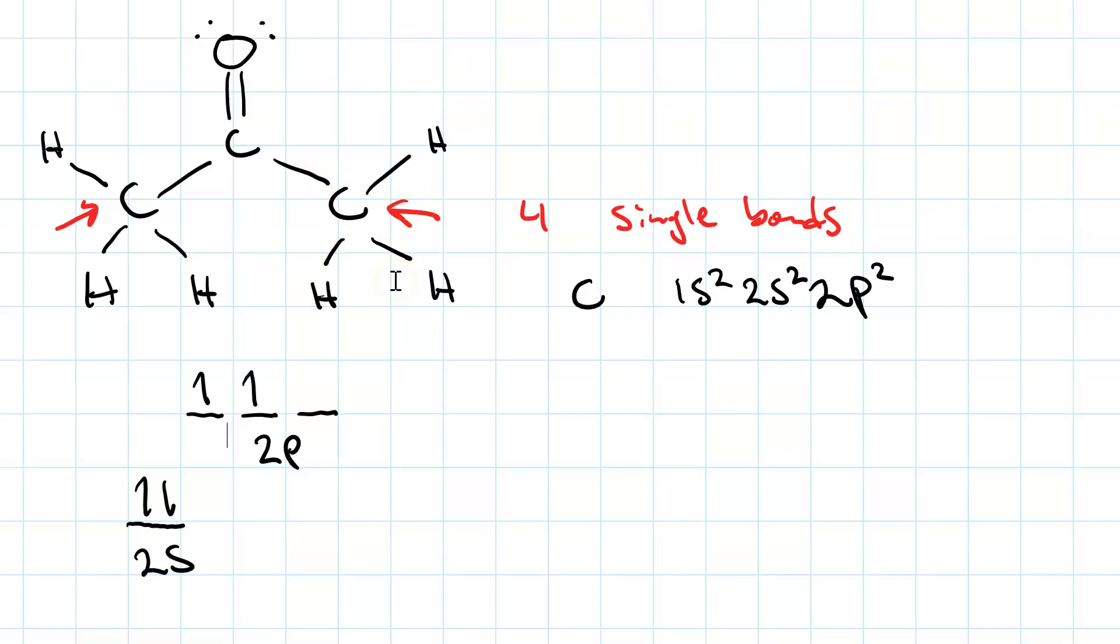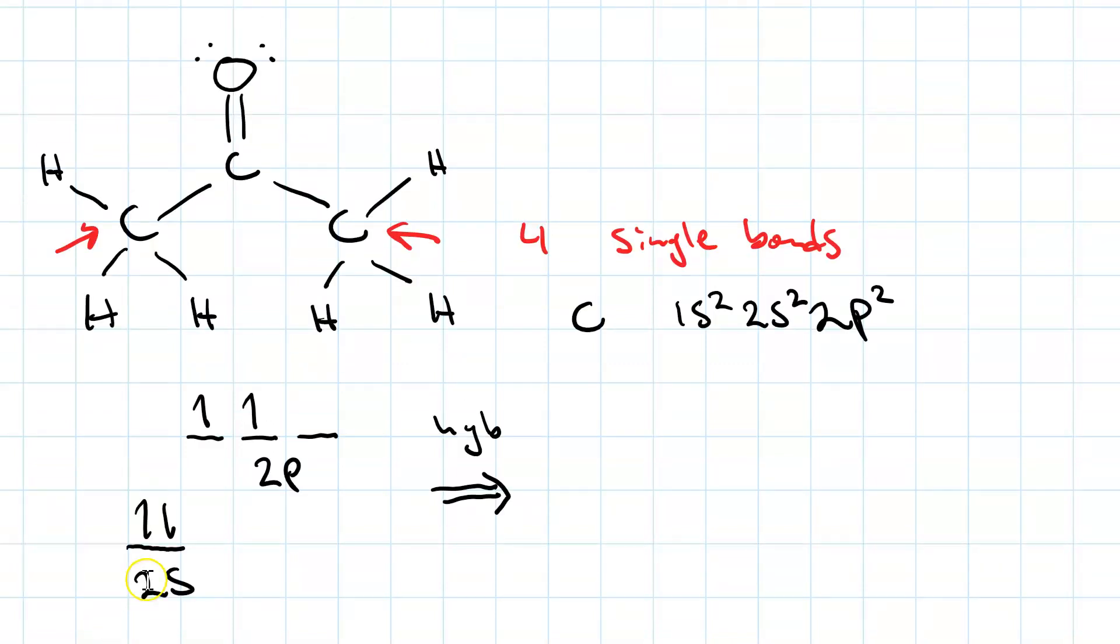And if we want to make four single bonds, we need four hybrid orbitals. So if we hybridize the s orbital and the three p orbitals, that's four orbitals that we started with, we're going to get four hybrid orbitals. They will all have the same energy, which is the average of the s and the p's. And we're going to call them sp3 hybrids because each one is composed of one-quarter s character and three-quarters p character. And now if we put in our electrons, we had three spin up and one spin down.